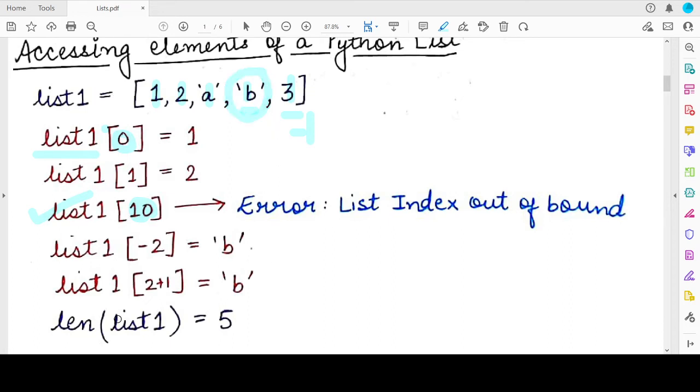Now when we say list 1[2+3], so it means that lists also allow you to write down an expression that evaluates to an integer value that can be used as an index. So here also, this syntax is also right. You can specify an expression in place of index value which evaluates to an integer. And the result here is the third index value. So index 0 is 1, index 1 is 2, index 2 is A, and index 3 is the character B. So both of them will return the same result.